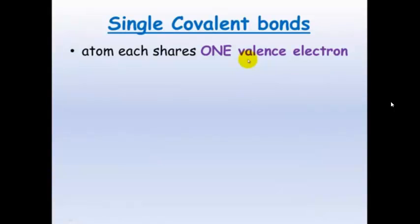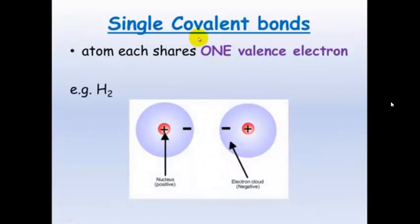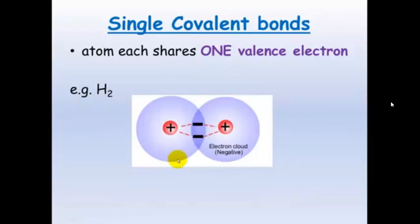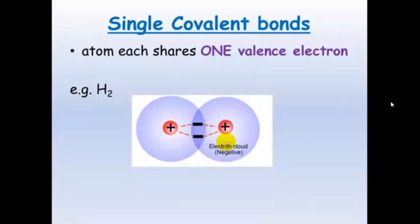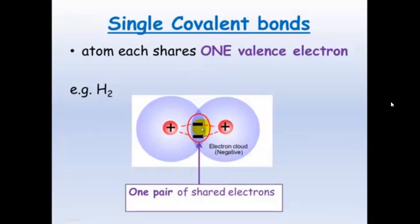Each atom shares one valence electron and this forms a single covalent bond. Hydrogen is an example of this — the atoms share these electrons, forming an electrostatic attraction between the positively charged nucleus and the negatively charged cloud of electrons in between. This is what holds the two atoms together. One pair of shared electrons is a single covalent bond.